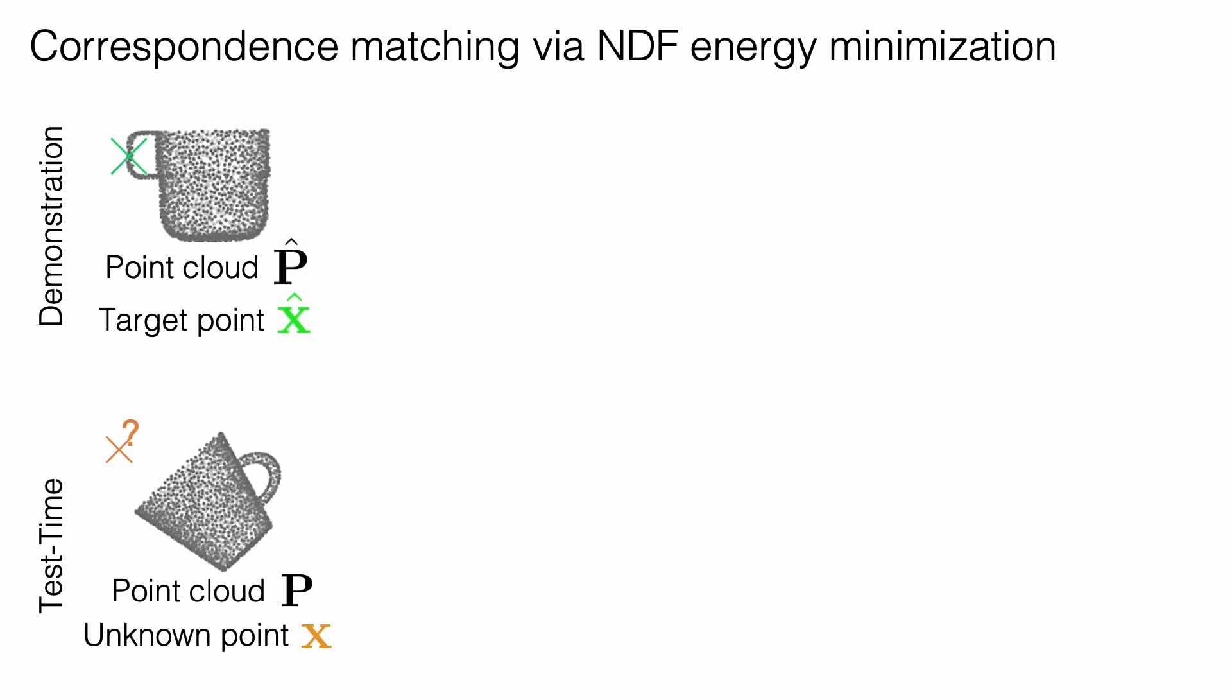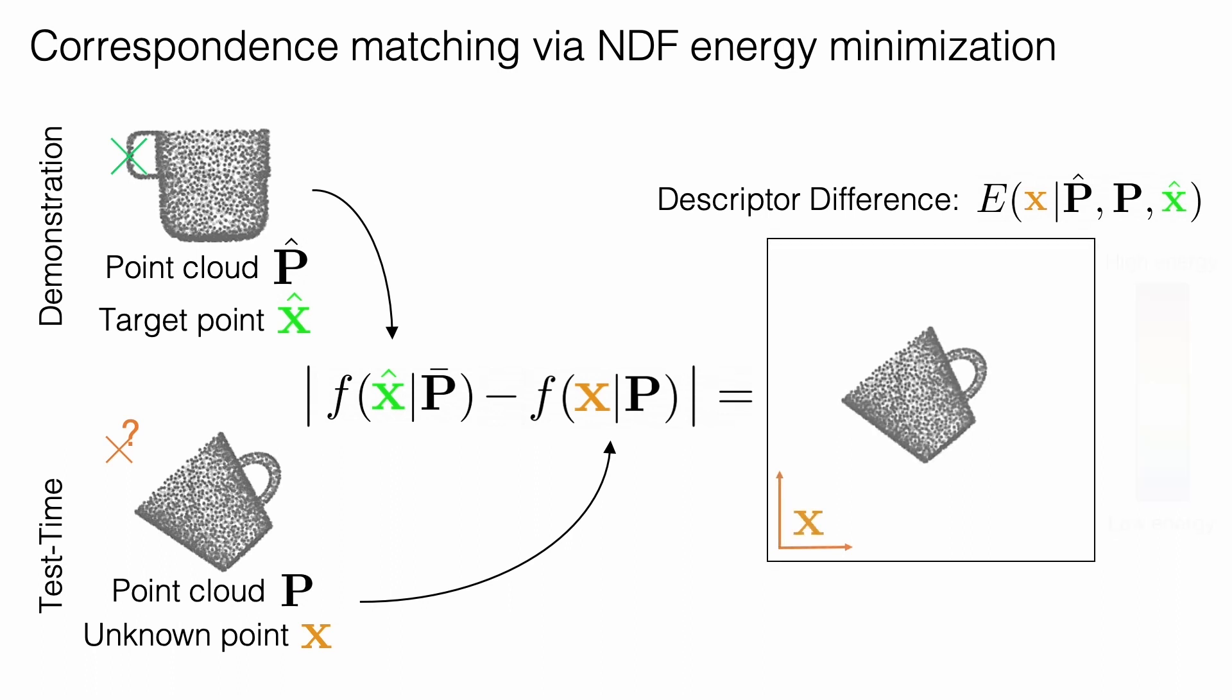Given a reference point, we now want to obtain the corresponding point for a new shape. We set this up as an energy minimization problem, where energy is defined as the descriptor difference between two points. Different points lead to different energies. When we consider descriptor distances throughout the whole region, we obtain continuous energy landscapes that can be optimized to find the minima that corresponds to the reference point.